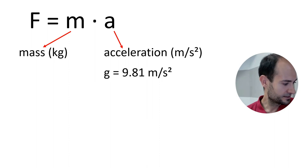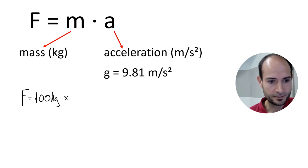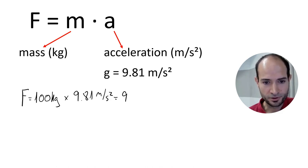So, let's calculate, for example, 100 kilograms. So, the force of 100 kilograms equals the mass, 100 kilograms, times the acceleration of gravity, 9.81, and that equals 981 newtons.